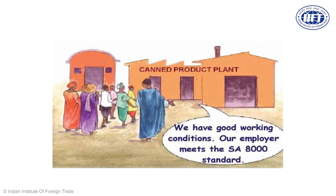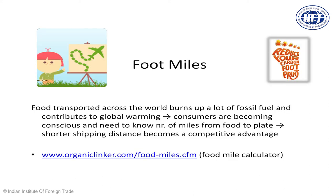The other social standard is SA8000, where you are audited by an external body and receive a certificate if you are giving your workers very good working conditions. This talks about how you treat your workers in terms of benefits — no discrimination between male and female, no discrimination on the basis of religion or caste, good working conditions in terms of CSR activities, work culture, and work environment. Then there is a concept coming up known as environmental standards, which covers two major standards: food miles and water footprint.